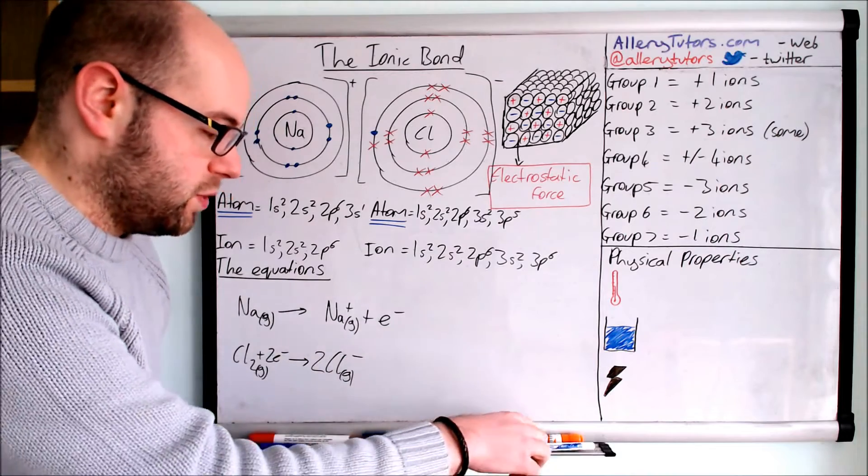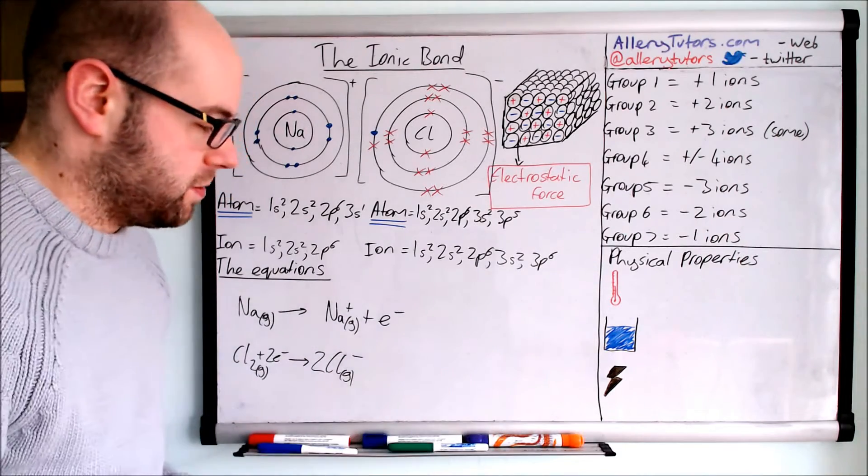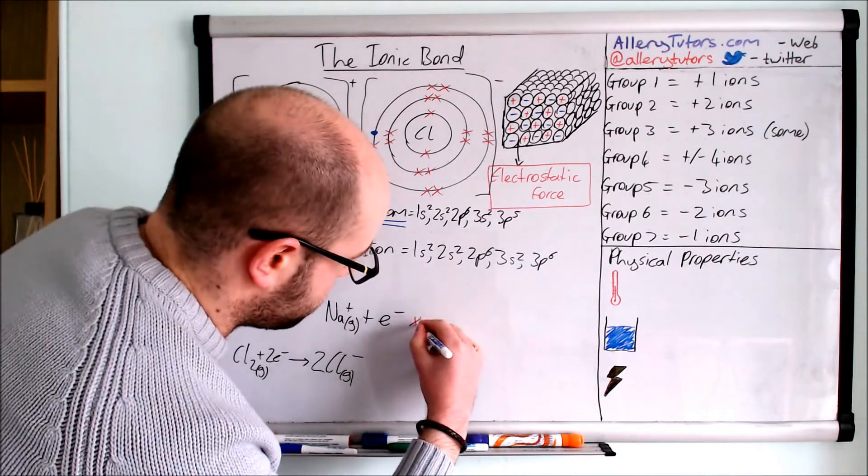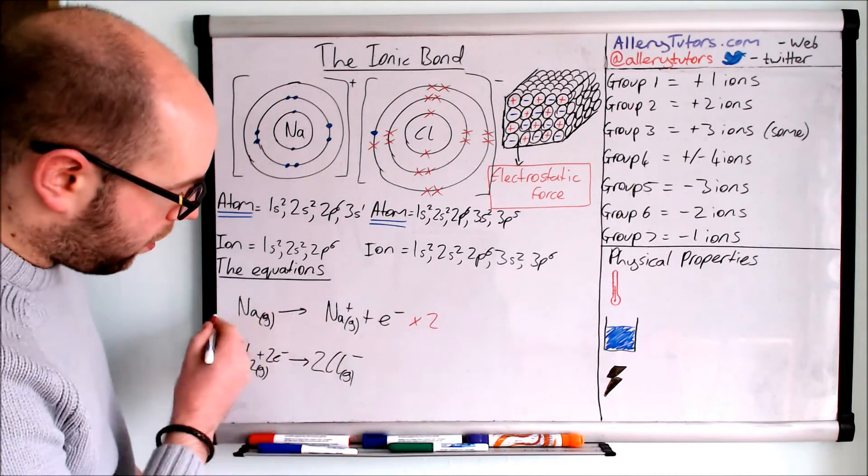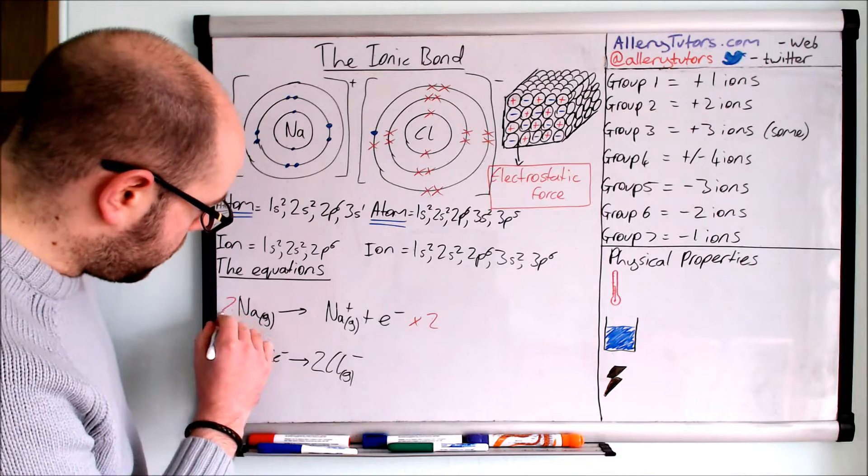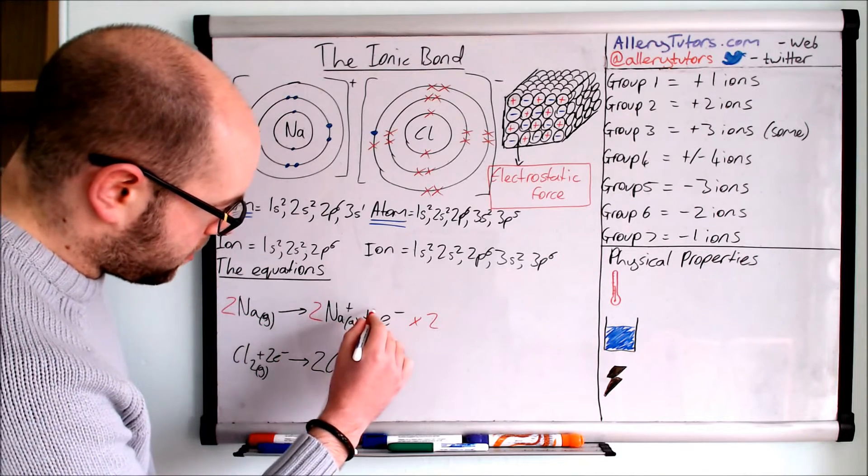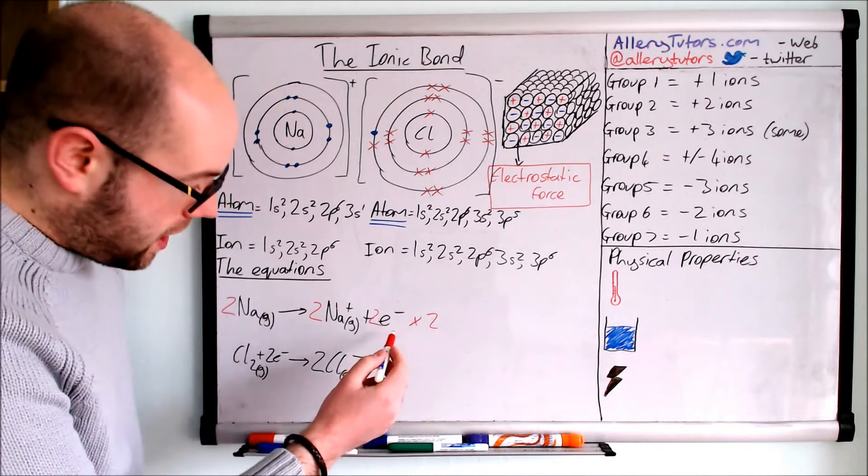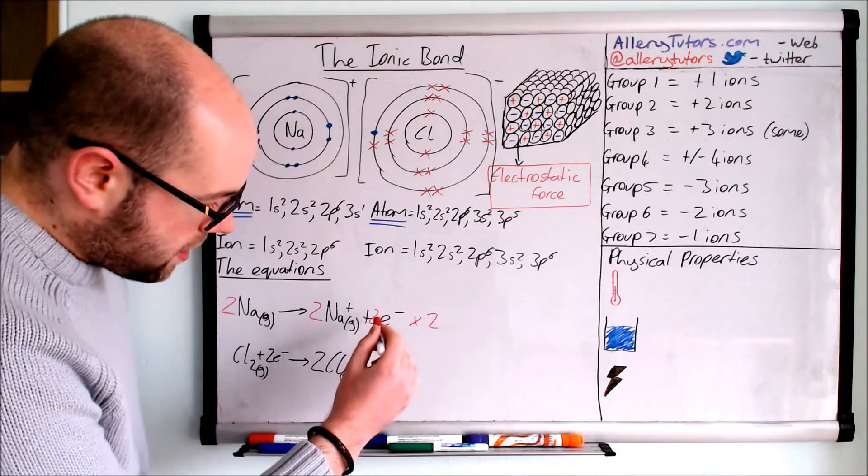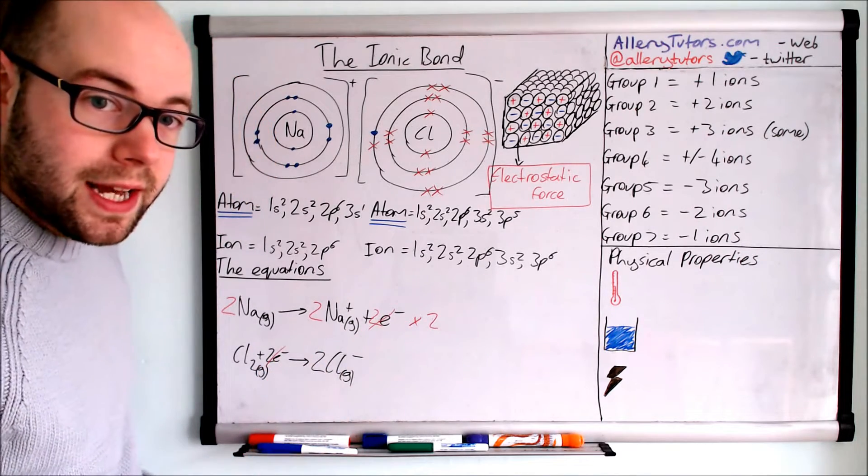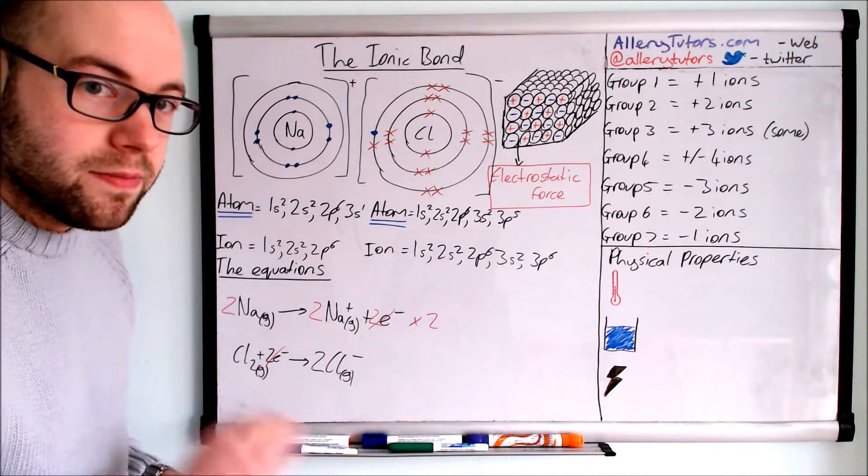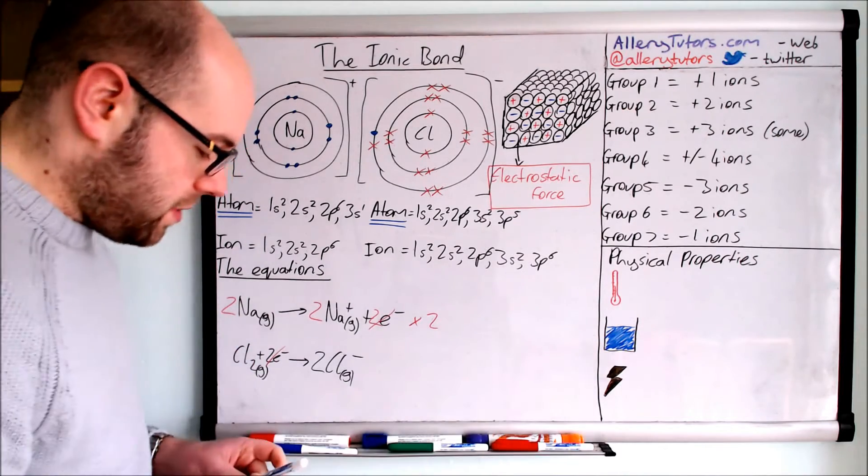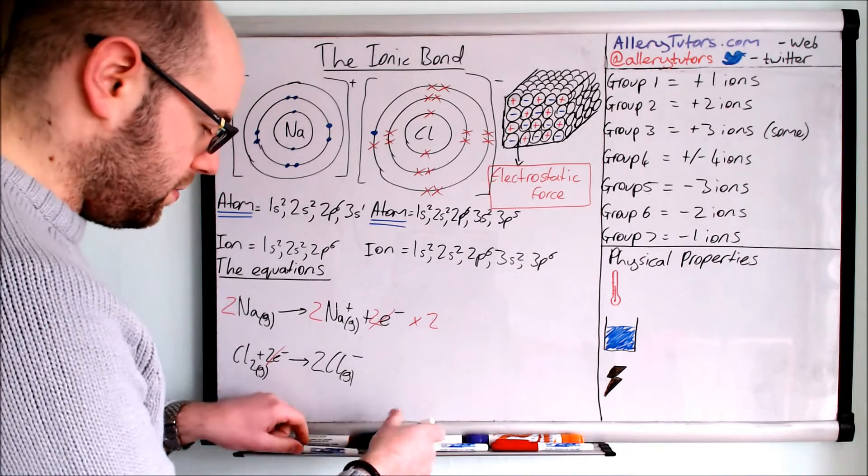So the way we should do this is multiplying that top one by two. So we're going to times that one by two. What that means is if we multiply all of this by two, we get two Na, two Na plus and two electrons. You can see here the electrons now balance on both top and bottom equations and we can cancel them out. An ionic equation has no electrons in it, so you must get rid of your electrons.